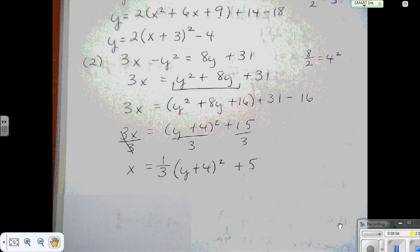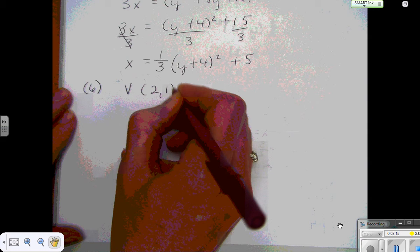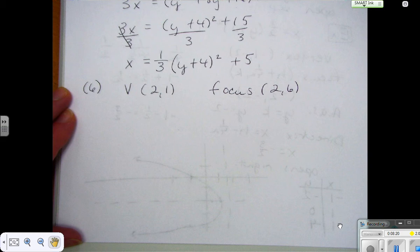All right, so let's look down at the bottom, number 6. On number 6, they give you a vertex point of 2, 1, and a focus point of 2, 6, and they want you to write the equation of the parabola.